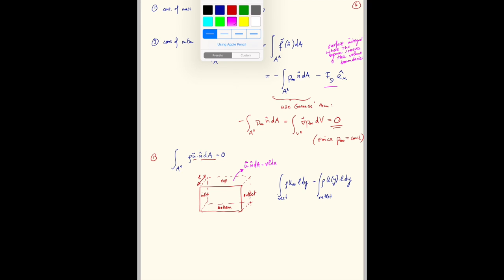So we have plus top, integral over top, rho V L dx. And then minus the bottom, because again the surface normal points in the opposite direction. So we pick up a minus, minus V L dx.